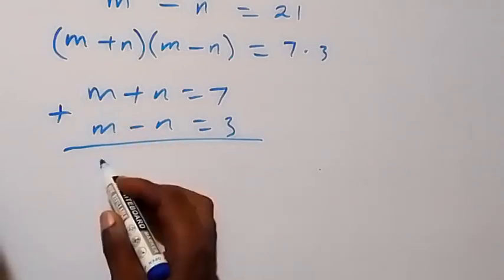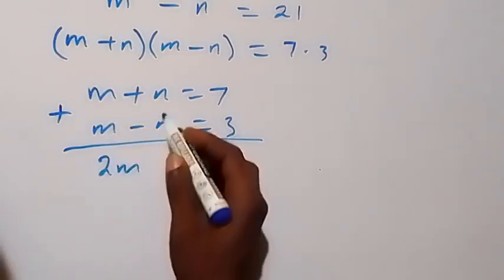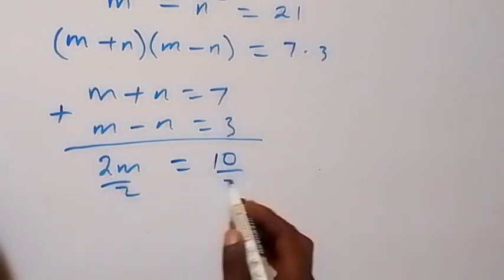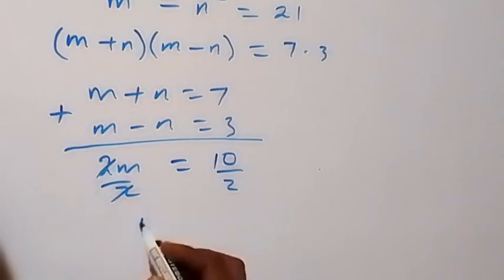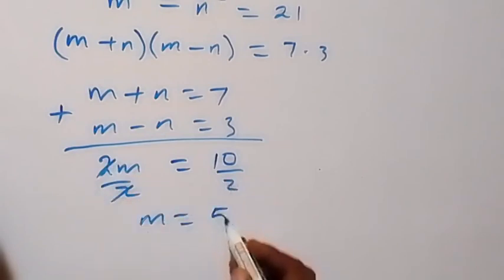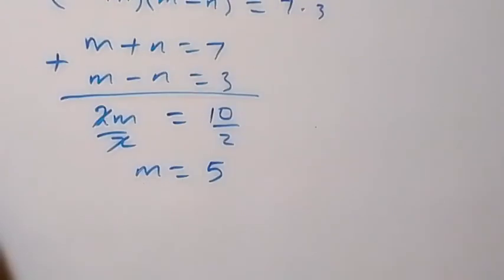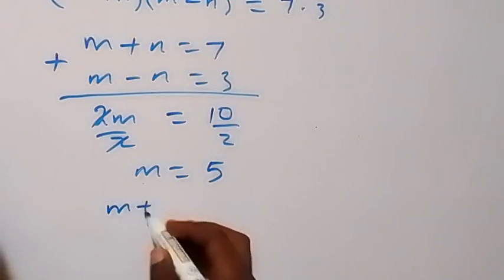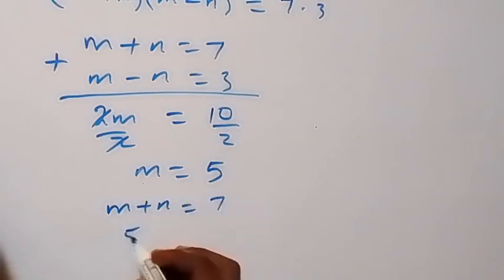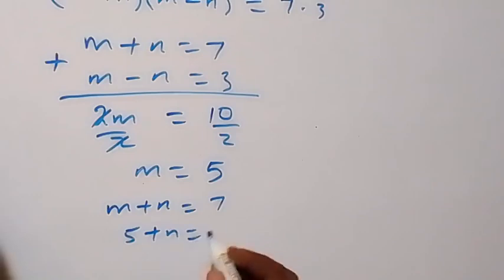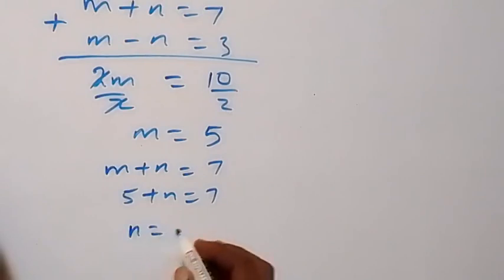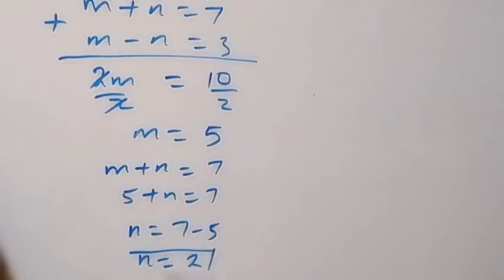Let's add first, and this will be 2m, so n will have been eliminated. We have 7 plus 3, that's 10, and divide both sides by 2 to cancel out, so m equals to 10 over 2, that's 5. So m is 5. Then from one of the equations we have m plus n equals to 7, that means 5 plus n equals to 7, take 5 there, so n equals to 7 minus 5, that is n equals to 2.